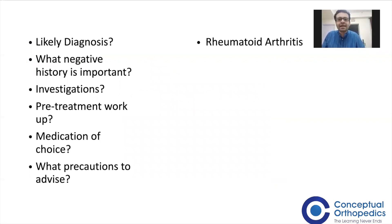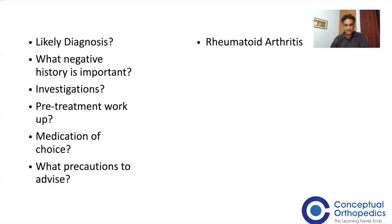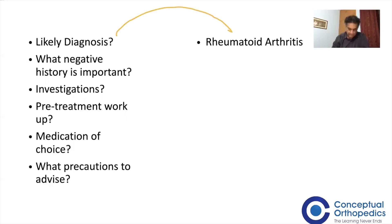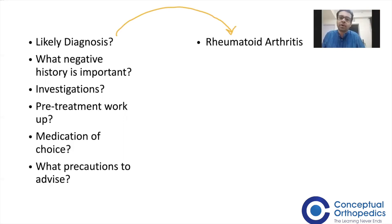The questions related to this case are: what is the likely clinical diagnosis, what negative history is important, what investigations do we need to do, what pre-treatment workup must be done, what is the medication, and what are the precautions? It is very obvious — a young female with polyarthritis of small and large joints and DIP spared is likely to be clinically rheumatoid arthritis.